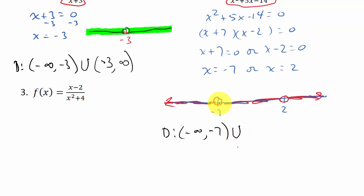My domain is everything from negative infinity to negative 7 in parentheses because it's not included, or everything from negative 7 to 2 with both in parentheses because neither one's included, or everything from 2 to infinity. This would be my domain.